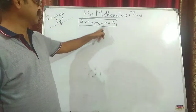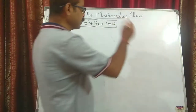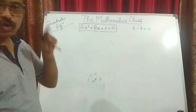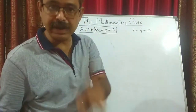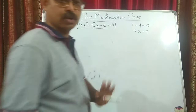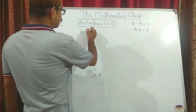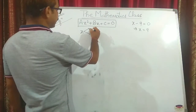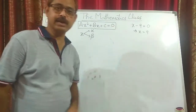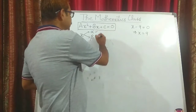Now, AX squared plus BX plus C is the general form of a quadratic equation. For a linear equation like X minus 9 equals 0, solving gives only one value: X equals 9. However, when you solve a quadratic equation, you will always get two values of X — let us call them alpha and beta. Whenever you solve AX squared plus BX plus C equals 0, you always get these two values.